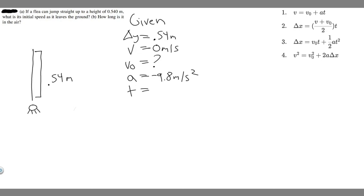And then T, we also don't know, because they're asking how long is it in the air, which is time. So I write T equals question mark because we don't know. So those are the variables that we're given.